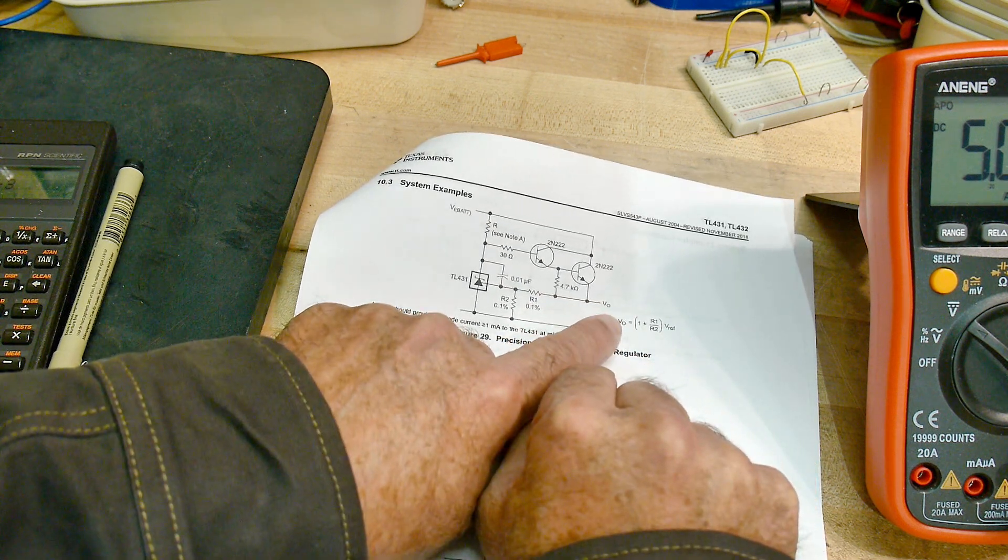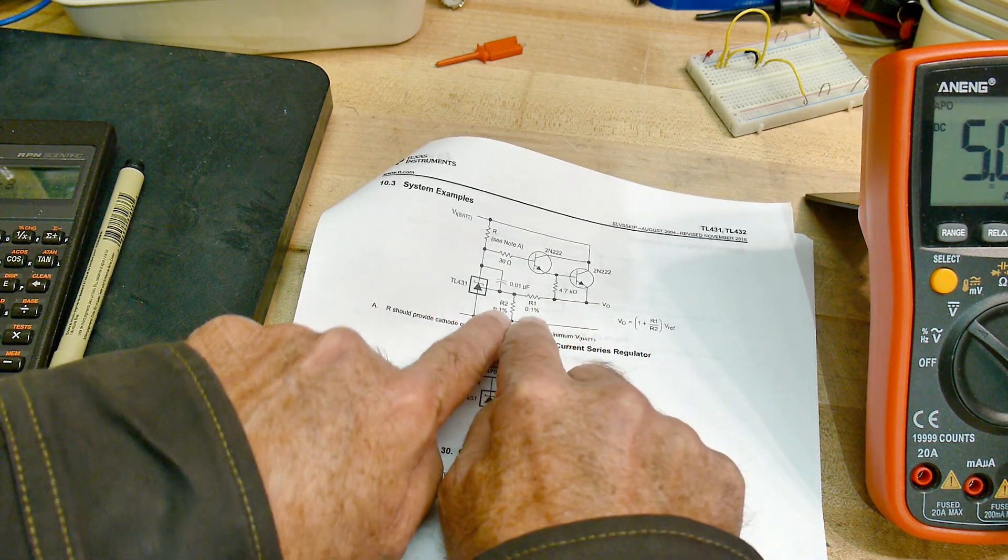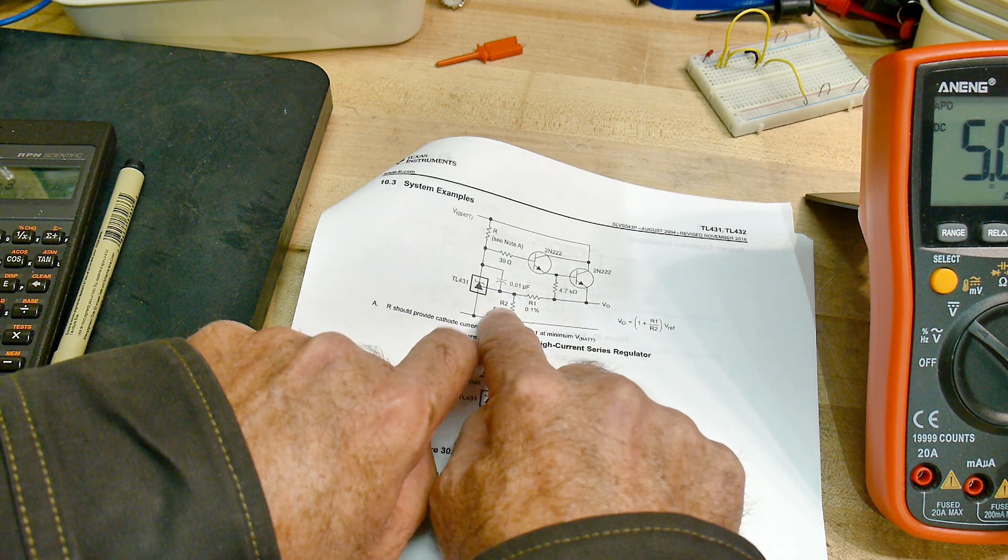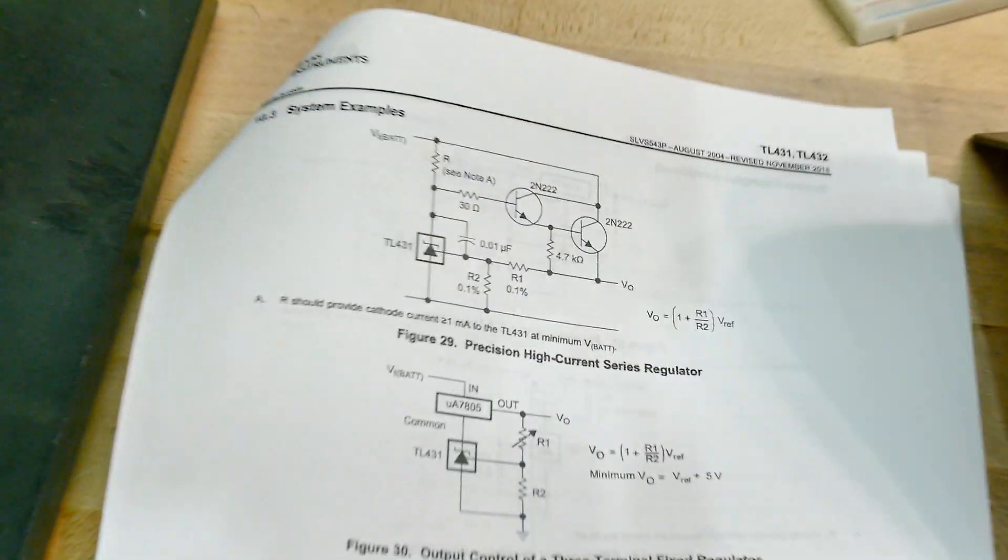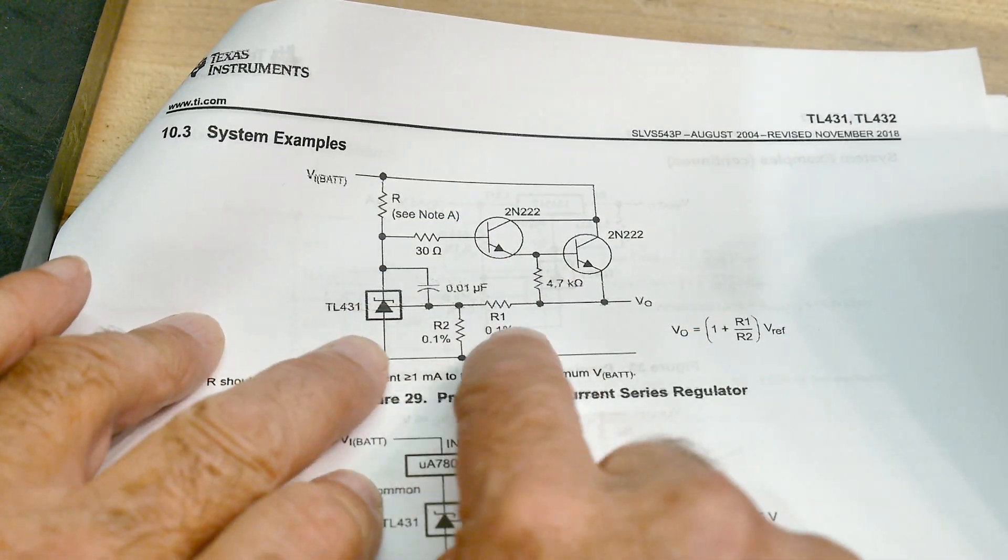So they're using a Darlington pair here to get a lot of current. And then they're monitoring the output voltage here, V out. They're monitoring that. So they have it divided by R1 and R2, and that goes into the V ref.